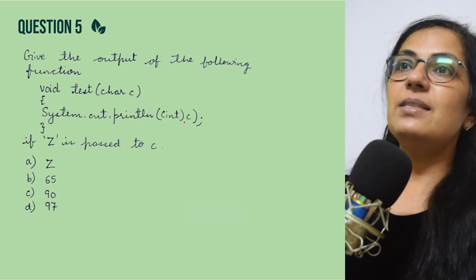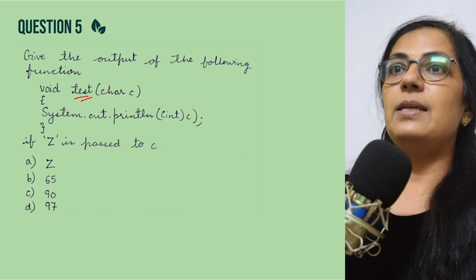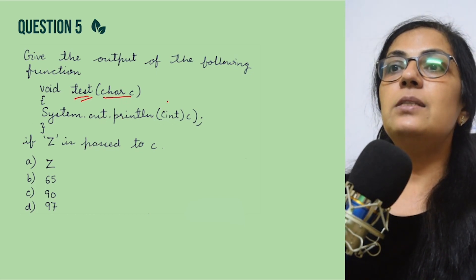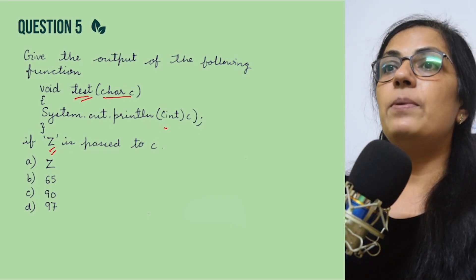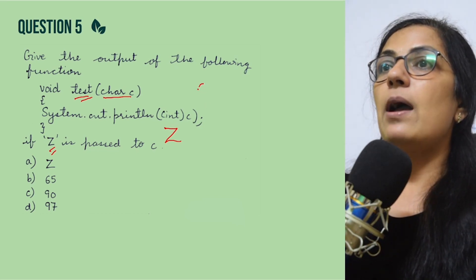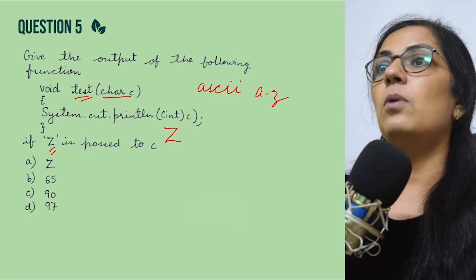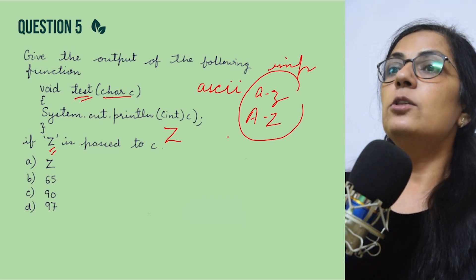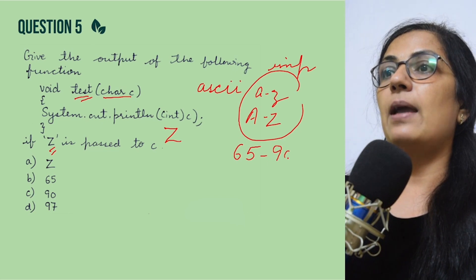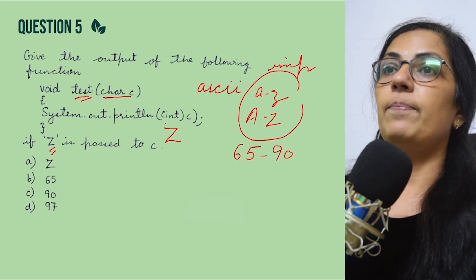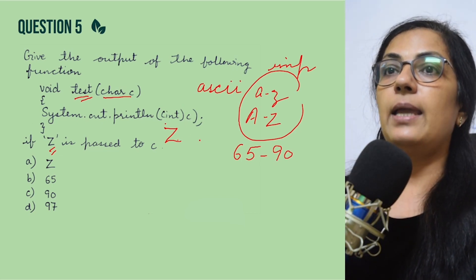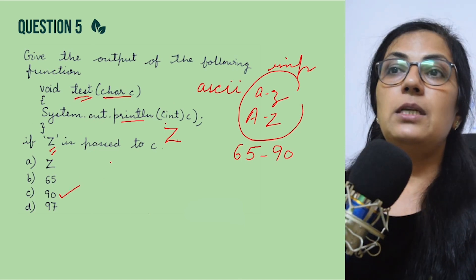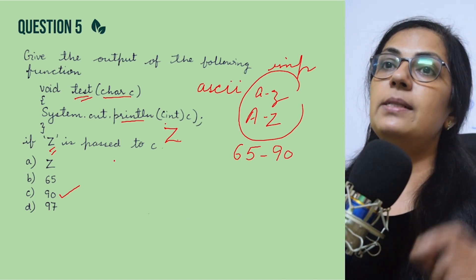The next question: give the output of the following function 'test' which takes one parameter of char type and prints int(c). If uppercase 'Z' is passed to c, you need to remember the ASCII codes: capital A is 65 and capital Z is 90. So int(c) — the integer value of uppercase Z — is 90. System.out.println will print 90, not Z. The correct option is C.